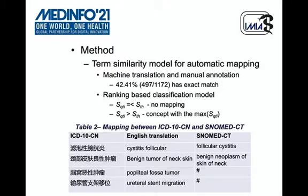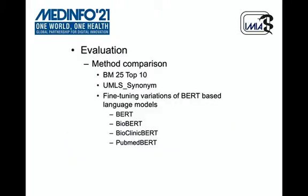Next, we built a ranking-based classification model to decide if there is an exact mapping and which SNOMED CT code should be chosen. We first set up a threshold of semantic similarity. If the similarity between the ICD-10CN and SNOMED CT code is lower than this threshold, then there is no mapping between them. Otherwise, the SNOMED CT concept with the highest similarity will be chosen as the exact match.